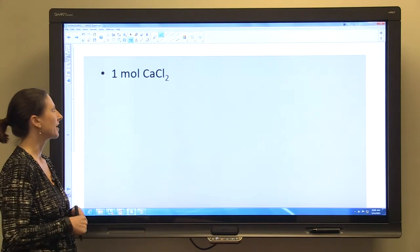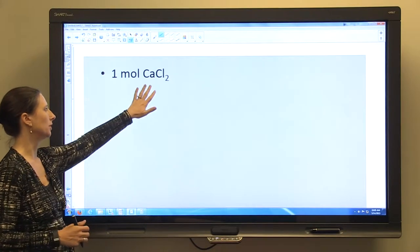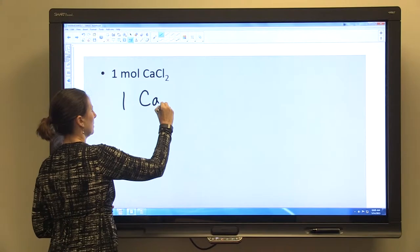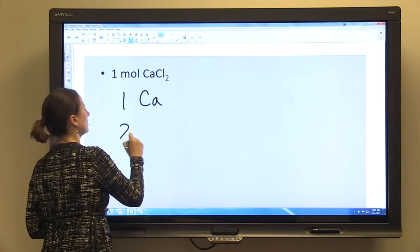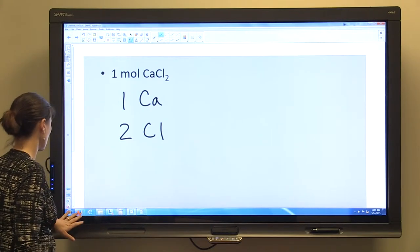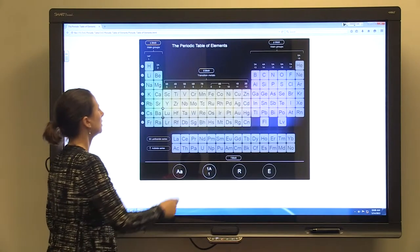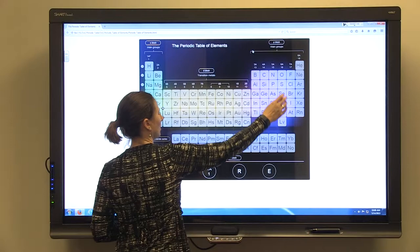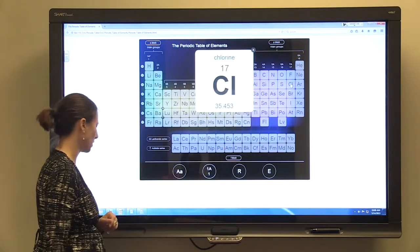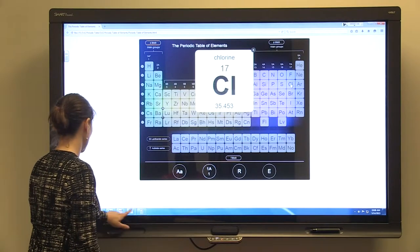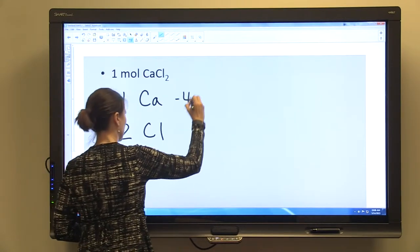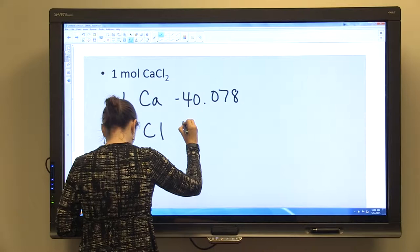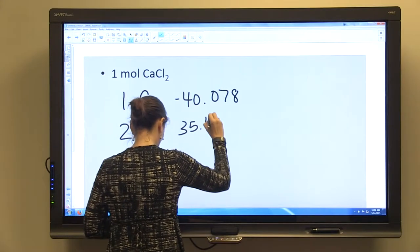If we're looking at one mole of calcium chloride, which is CaCl2, we have one atom of calcium and we have two atoms of chlorine. We're going to go to our periodic table. Calcium is 40.078 and chlorine is 35.453.